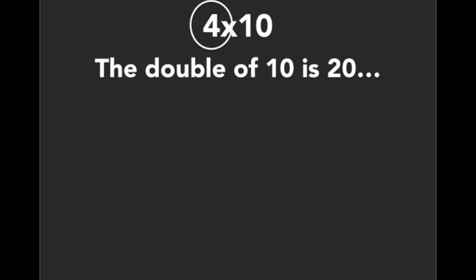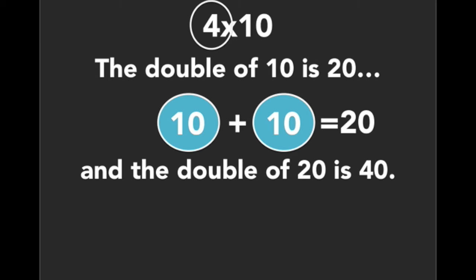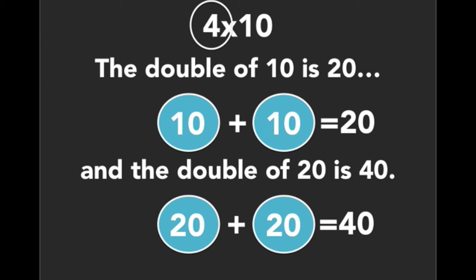Let's look at this a little bit closer. When we see an equation such as 4×10, you see the 4 and identify that this means we can use the double the double strategy. You always look at the other number, which in this case is 10, and you first double that 10. The double of 10 is 20. Now we double the 20, so the double of 20 is 40.